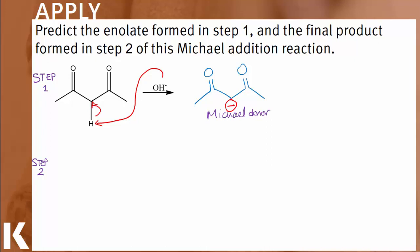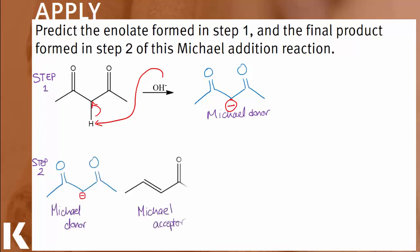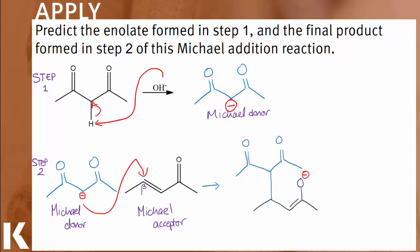In step two, we have the nucleophilic carbon attack the beta carbon of the Michael acceptor, which is pent-2-enal, and which we know through resonance will have the electrophilic carbon on the beta position. The Michael donor and acceptor add together to make this intermediate, and acid workup will cause the reformation of the carbonyl.